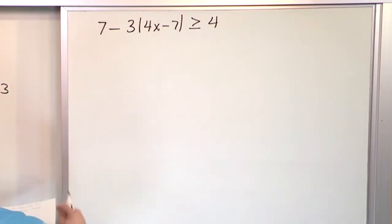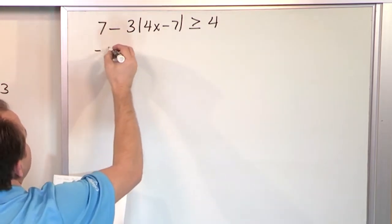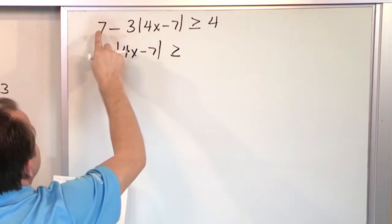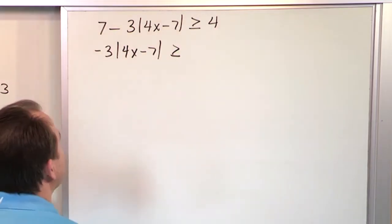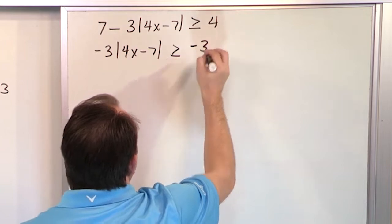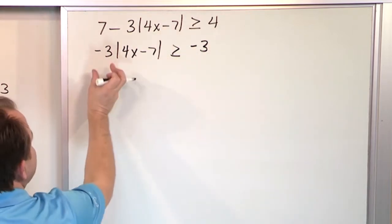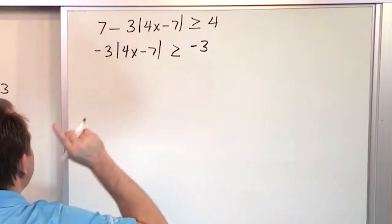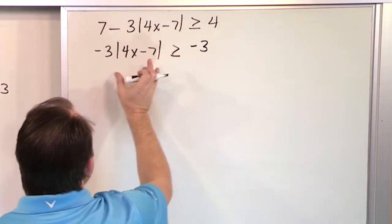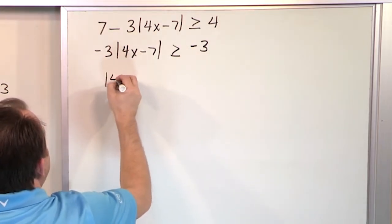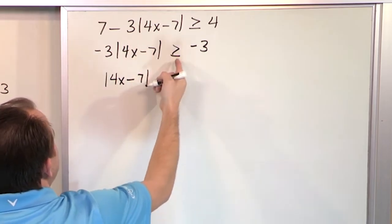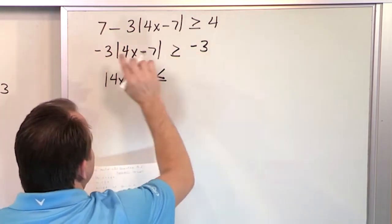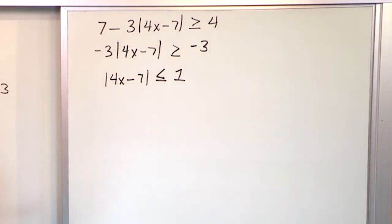First, get rid of the 7 by subtracting 7. When you subtract 7 from the left, you'll be left with negative 3 times absolute value of 4x minus 7, greater than or equal to — 4 minus 7 is negative 3 on the right. Now this negative 3 is multiplied by the absolute value, so to kill it we divide by negative 3. But don't forget: when we divide, we have to flip the sign. So we get absolute value of 4x minus 7, and then negative 3 divided by negative 3 gives us positive 1.